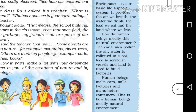Environment is a basic life support system. It provides the air we breathe, the water we drink, the food we eat, and the land where we live. Human beings modify this natural environment — car fumes pollute the air, water is collected in ports, food is served in vessels, and land is used to build factories. Human beings make cars, mills, factories, and manufacture containers. So what do you mean by environment? The answer is: environment is our basic life support system.